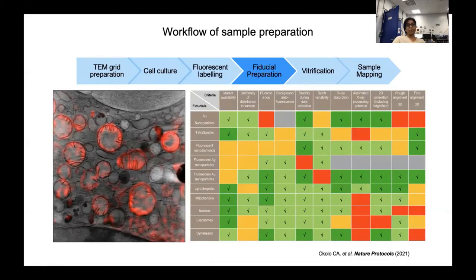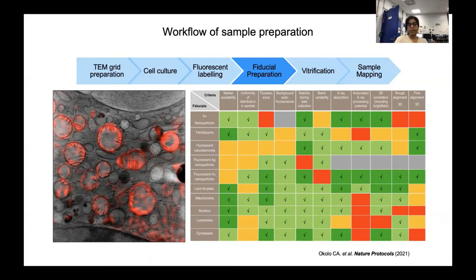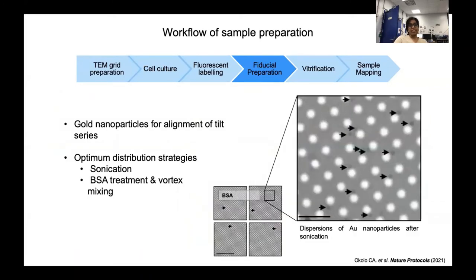The next step in sample preparation is fiducial preparation. We use fiducials for the means of data collection and correlation. We have produced a decision-making matrix to help users choose fiducials for their project for 3D correlation microscopy. We use either fluorescent or non-fluorescent gold nanoparticles varying in size from 150 to 250 nanometers. We prepare them either by sonication or by BSA treatment and vortex them to ensure homogeneous distribution. Fiducials are useful for the alignment of tilt series and x-ray tomogram reconstruction.